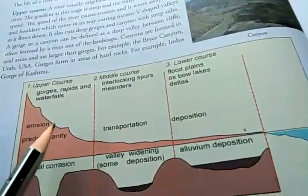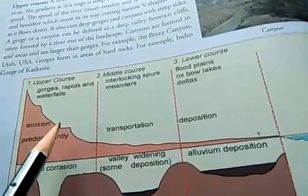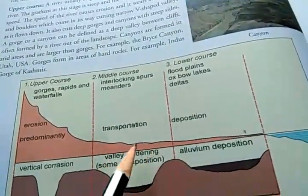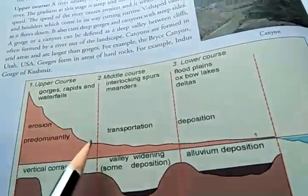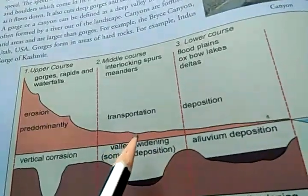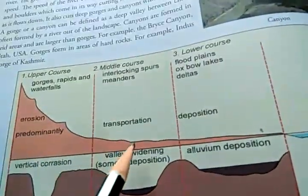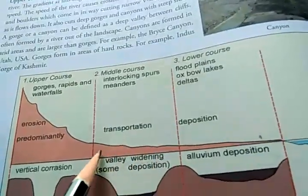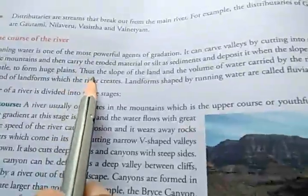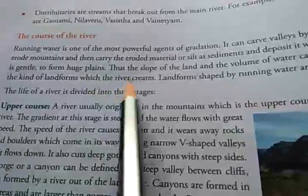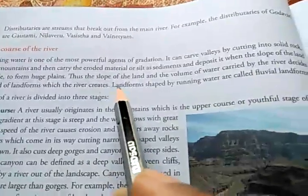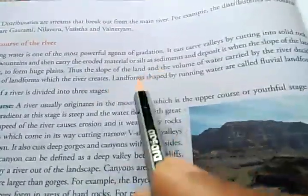These carried rock particles are called sediments. When the river enters the plain, the slope becomes gentle, so the flow of water slows down. As the flow slows, the sediments settle on the riverbed, leading to the formation of huge plains. The slope of the land and the volume of water carried by the river decide the kind of landforms created. If the slope is gentle, plain formation takes place; if the slope is steep, erosion takes place.